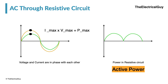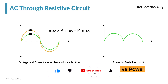There are two important things to remember about AC through a resistive circuit. One: voltage and current are perfectly in phase — they reach their positive peak at the same time, become zero at the same time, and reach their negative peak at the same time. Two: the power always remains positive and never goes to the negative side. I hope this was useful — please like and share the video. That's all for this one, keep watching and keep learning.